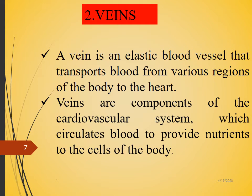Veins carry blood from different parts towards the heart. All veins carry deoxygenated blood except the pulmonary veins. Pulmonary veins carry oxygenated blood from the lungs to the left atrium of the heart — that is why they carry oxygenated blood. The superior vena cava collects blood from the upper body parts towards the right atrium, and the inferior vena cava collects blood from the lower body parts towards the right atrium. Large veins are called venae cavae, and small veins are called venules.